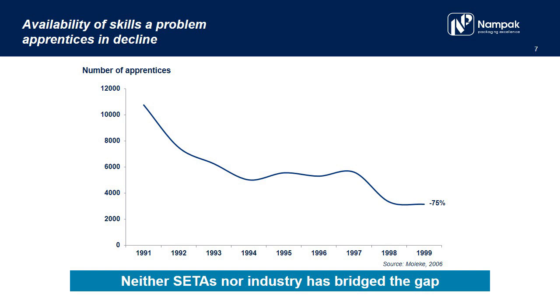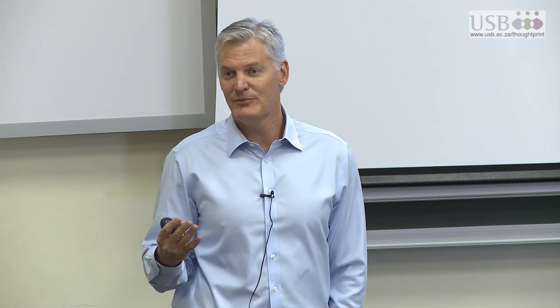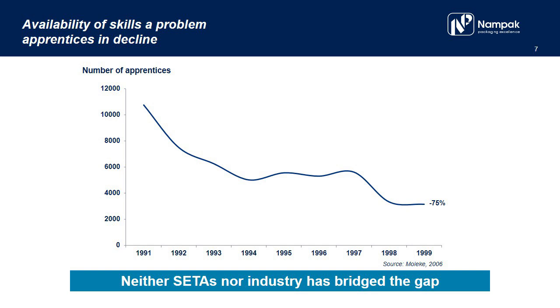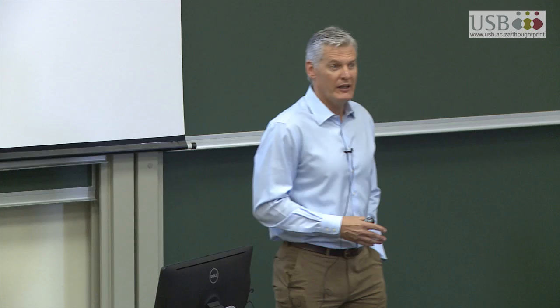Here's one thing where I think everybody in South Africa needs to stand up and take accountability: we have been investing in skills in the wrong part of the economy. We need to, as a country, restore the dignity and the appeal to young people of the blue-collar worker. But if you look at this, it's a precipitous decline. And the CETAs, more than half of which are in administration at any given point in time, they have not been successful.